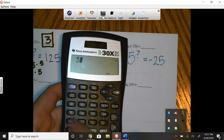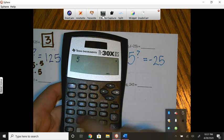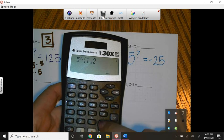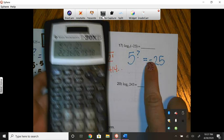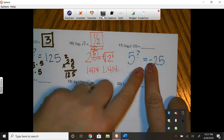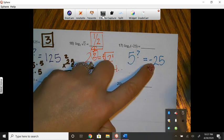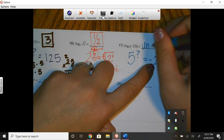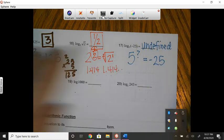Positive doesn't work. 0 doesn't work. That just makes 1. If we use fractions as an exponent, that's not going to work. It's a decimal number. So this is not possible. There is no exponent that ever gives us a negative output. So we would write undefined. Because it's not possible.